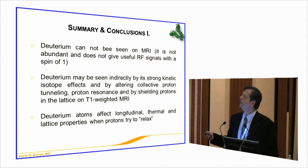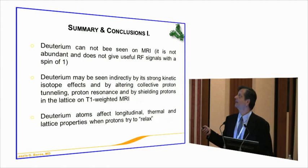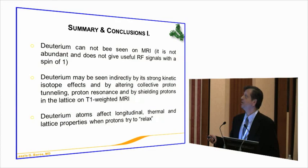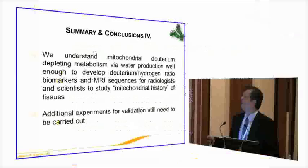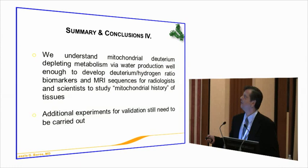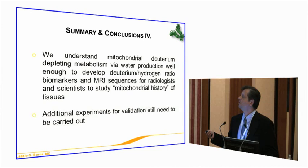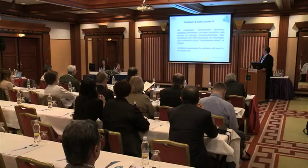It seems that deuterium can be seen on MRI — not directly, but indirectly. It is not very abundant, and it does not give a useful radiofrequency signal directly, but because of its isotope effects and its effect on relaxation, there is a close correlation between deuterium measurements and image intensities on MRI images. We hope that as we understand biochemistry and the deuterium-depleting mechanisms of biochemical processes, we will be able to give clinical tools to radiologists by understanding image density on MRI, the deuterium content of tissues, what causes deuterium loading into various human tissues, and how that can be interpreted using MRI sequences.